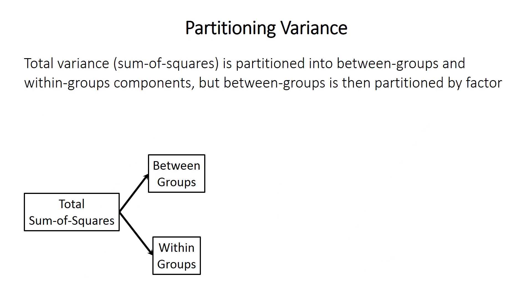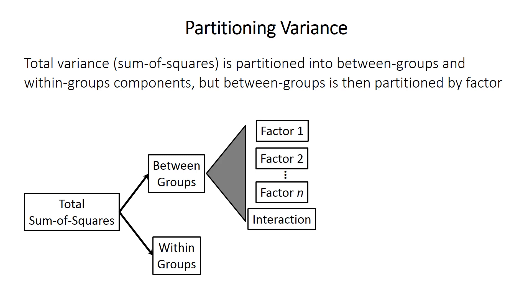The process is very similar to one-way ANOVA. Total variability — variance or sum of squares — is first partitioned into the between-groups component, which measures differences between group means. Smaller differences mean the groups more likely came from the same population; bigger differences mean the opposite. There's also the within-groups component, which measures the scatter within groups. Because there are multiple independent variable factors, the between-groups variance is further partitioned into the sum of squares for each factor as well as the interactions.